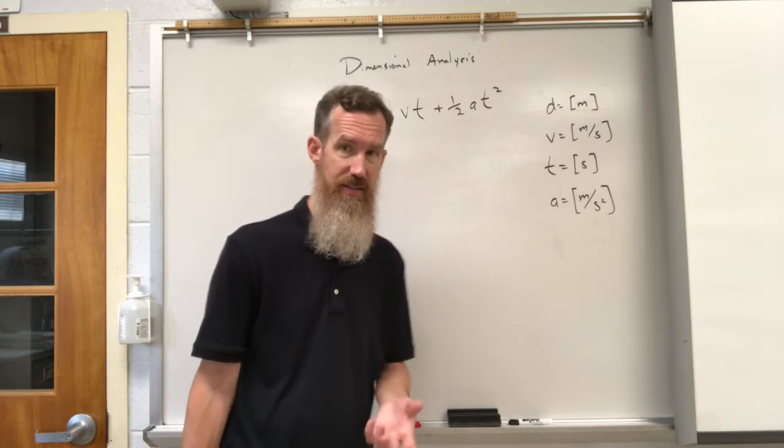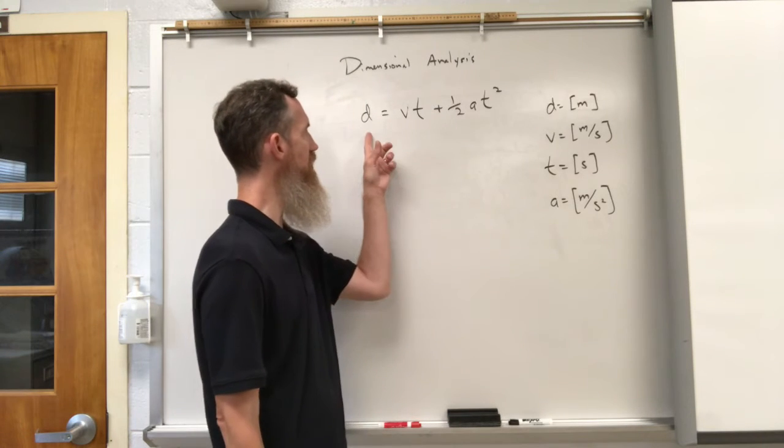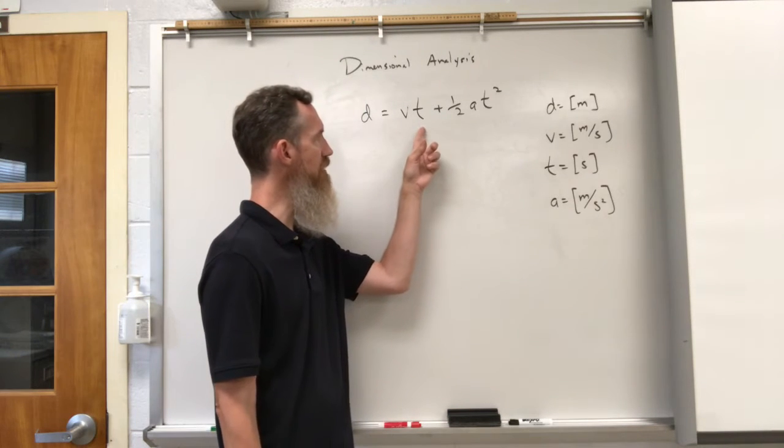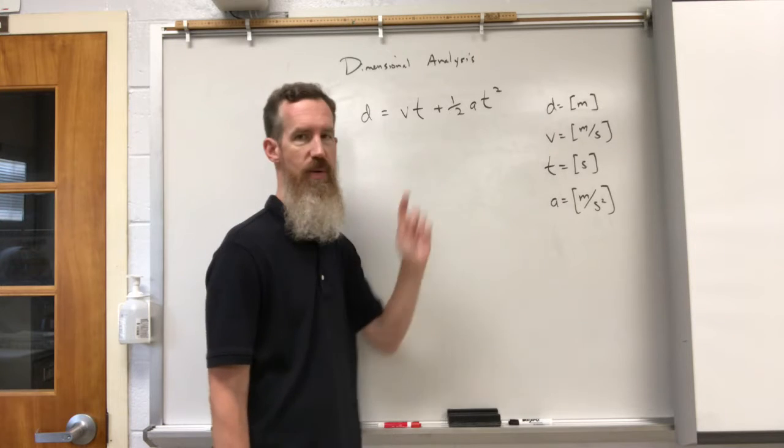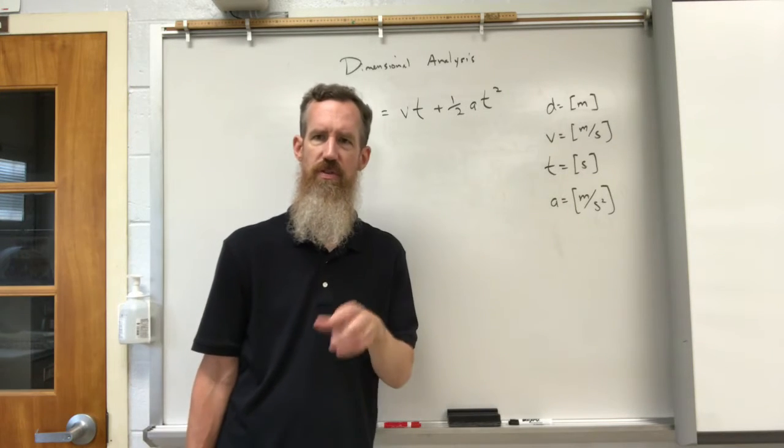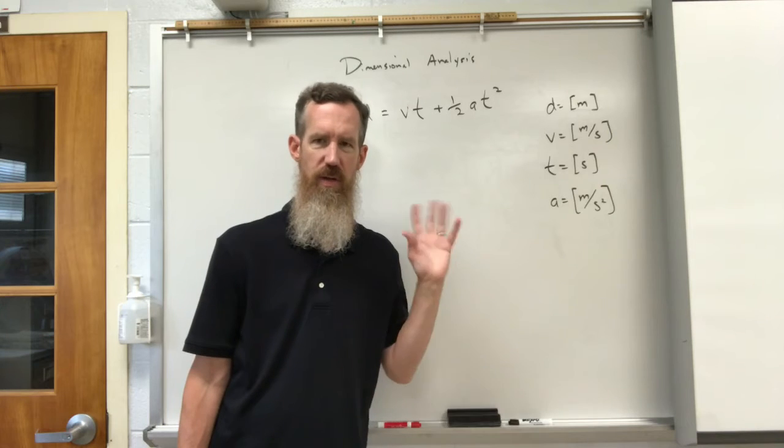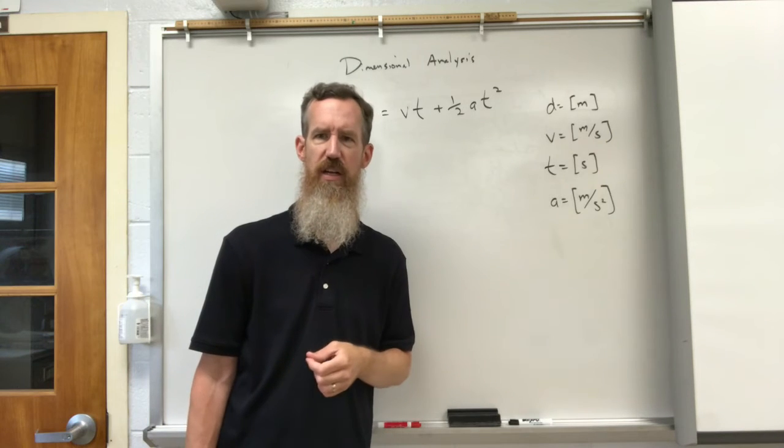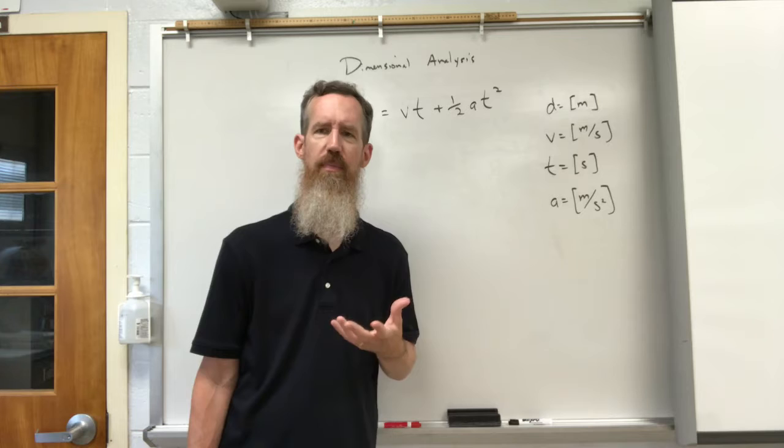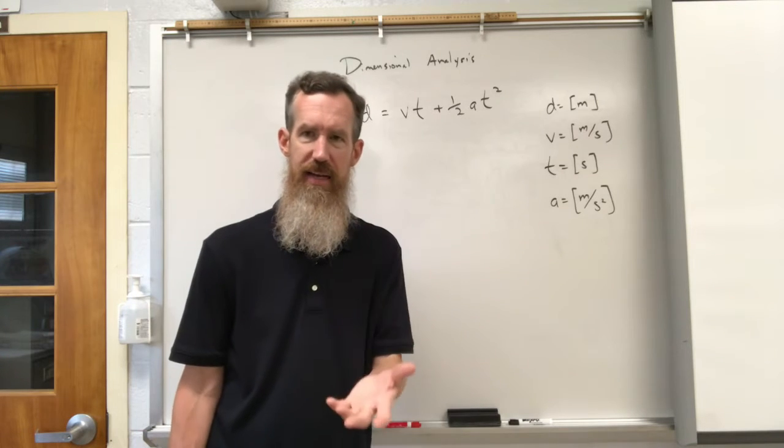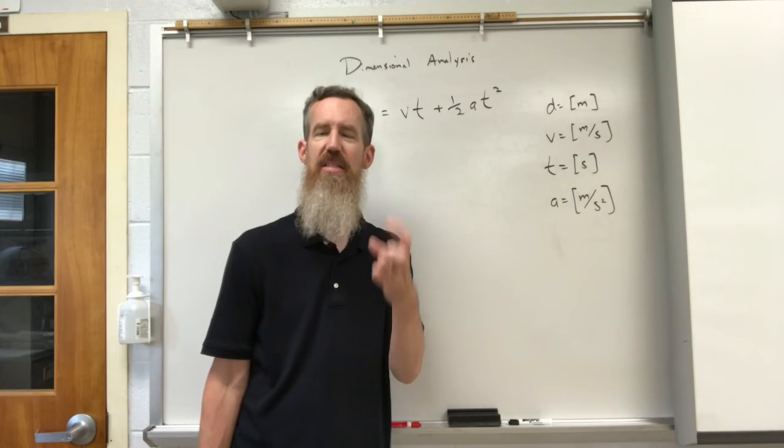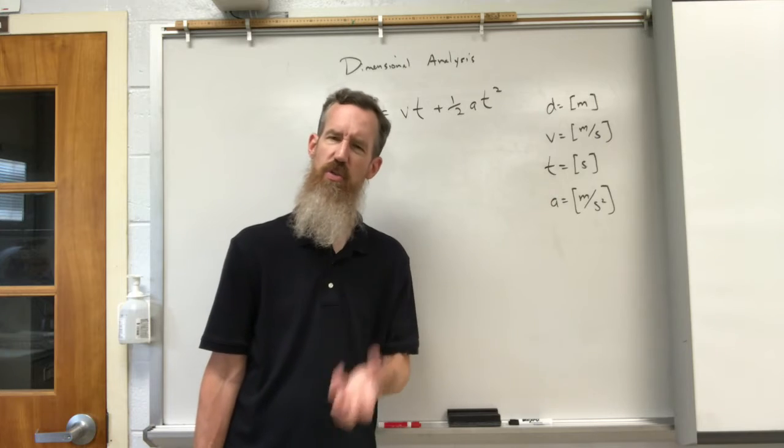So for instance, I have d = vt + 1/2 at². This is a version of one of the formulas you're going to learn later, although we make it a little more sophisticated. You're going to be asked, does the equation make sense dimensionally? Do the units work?